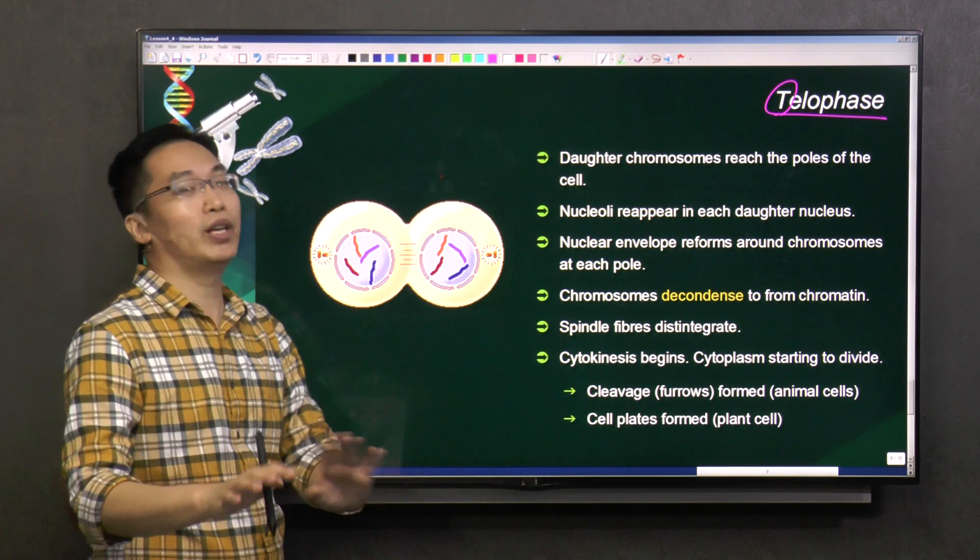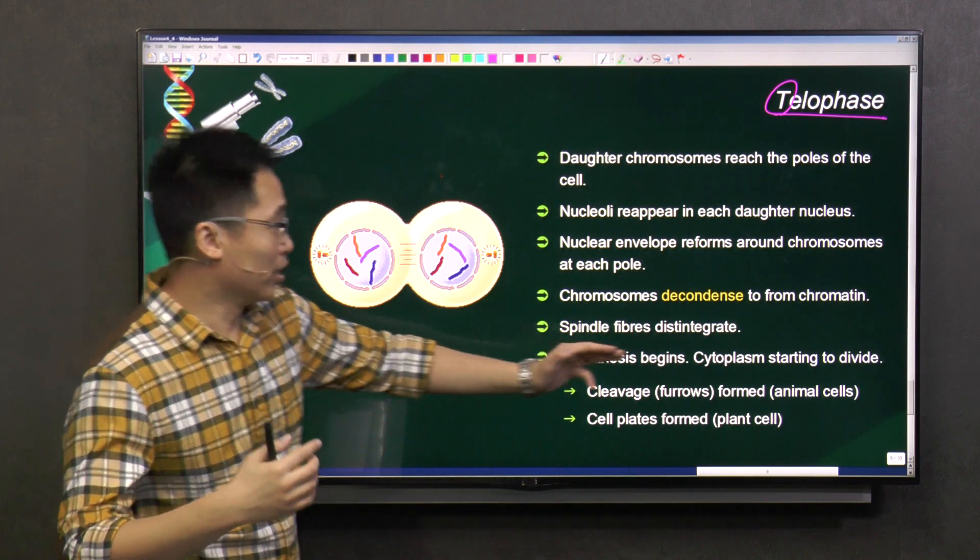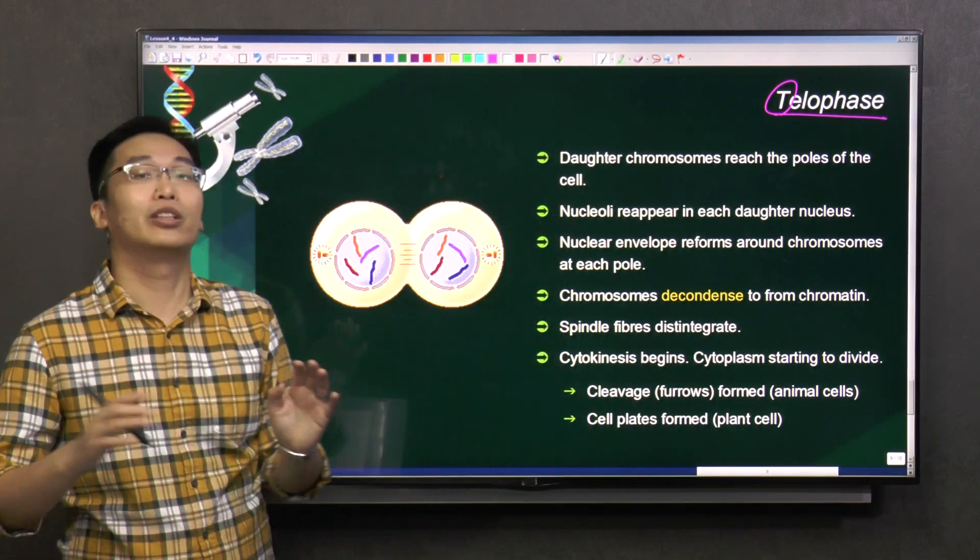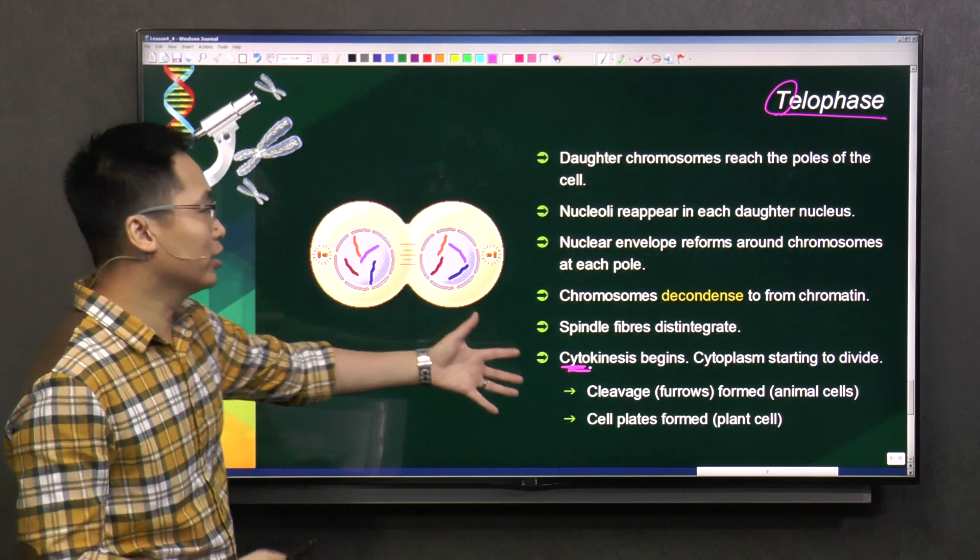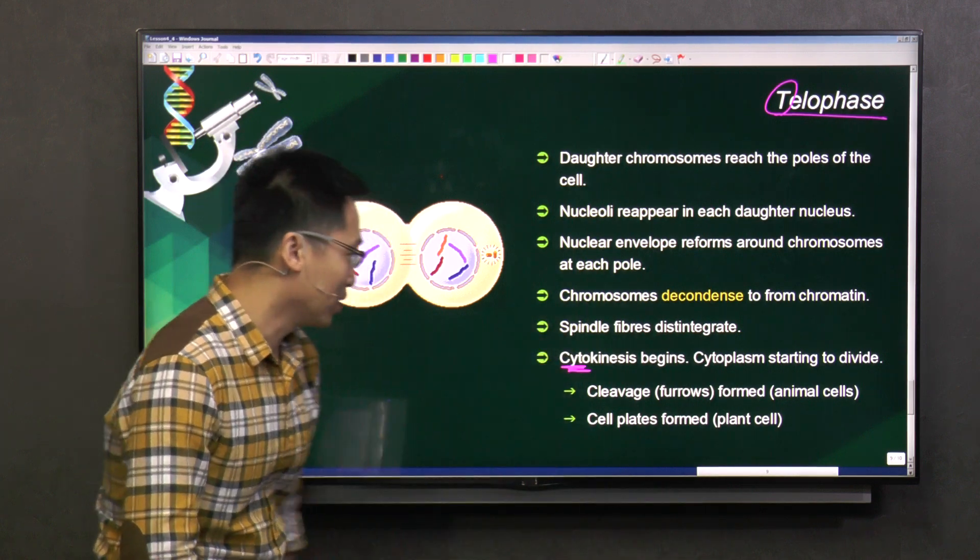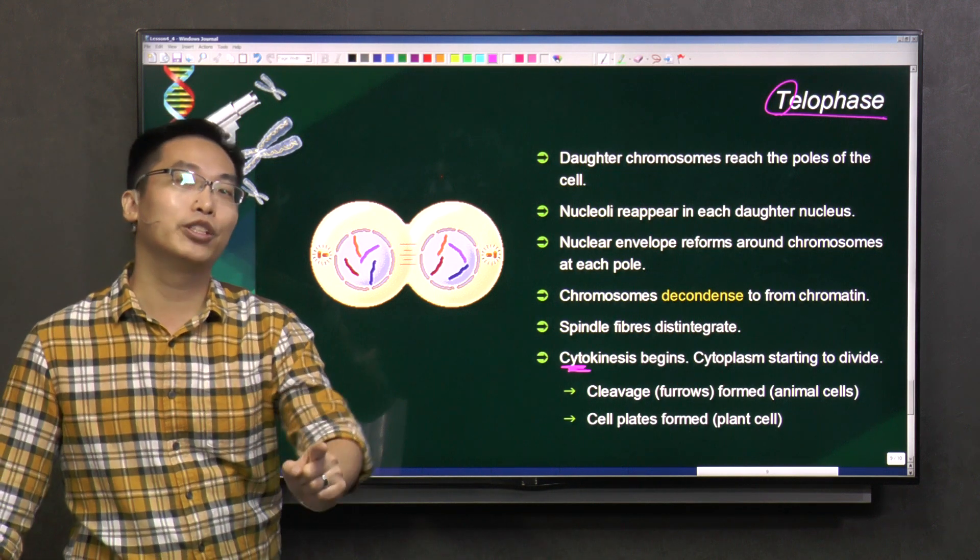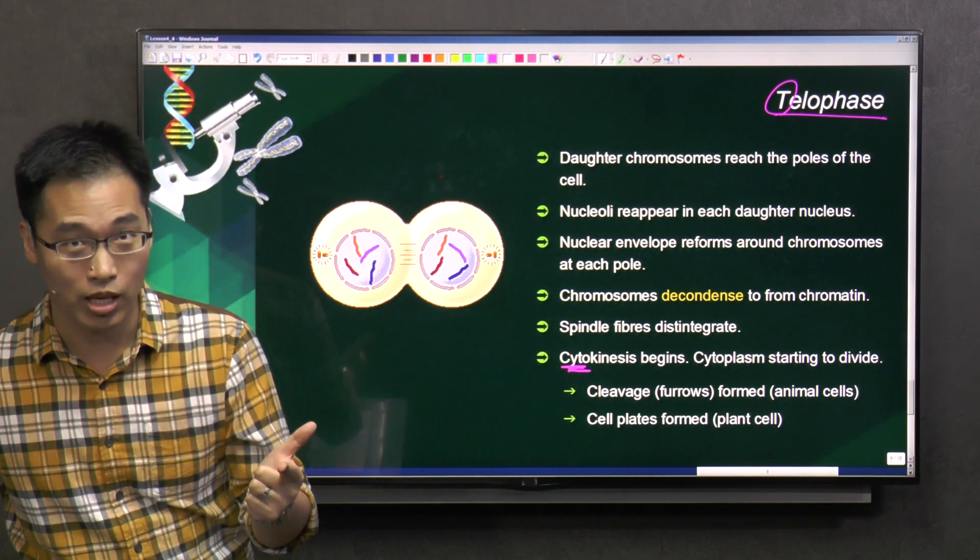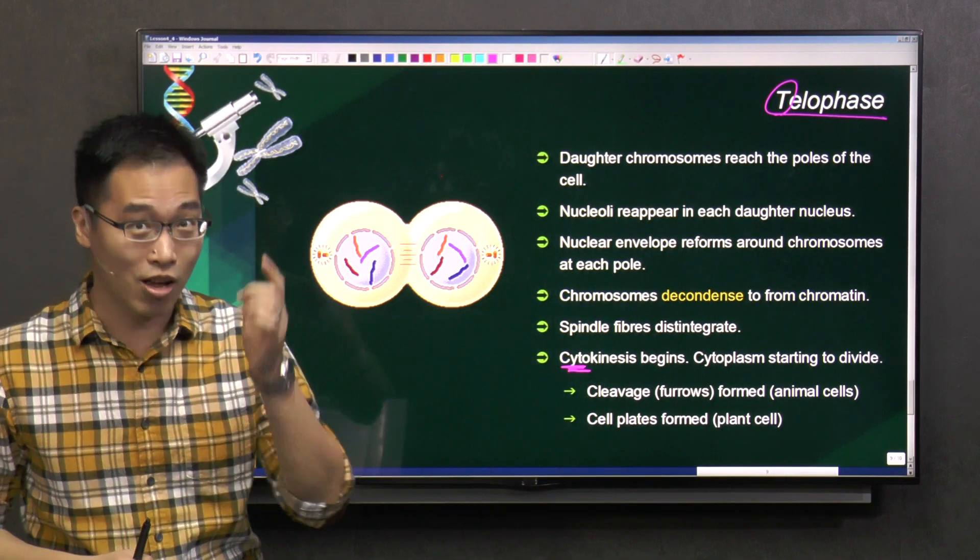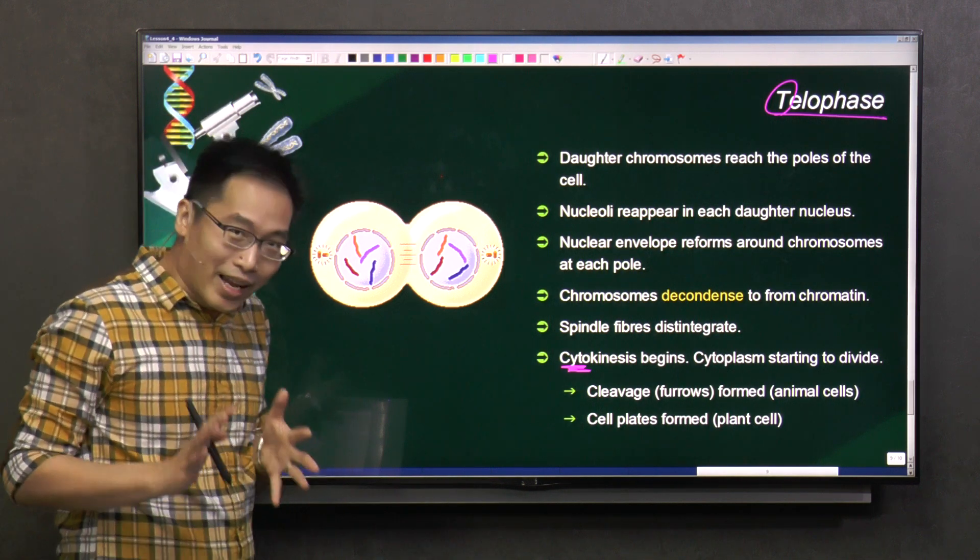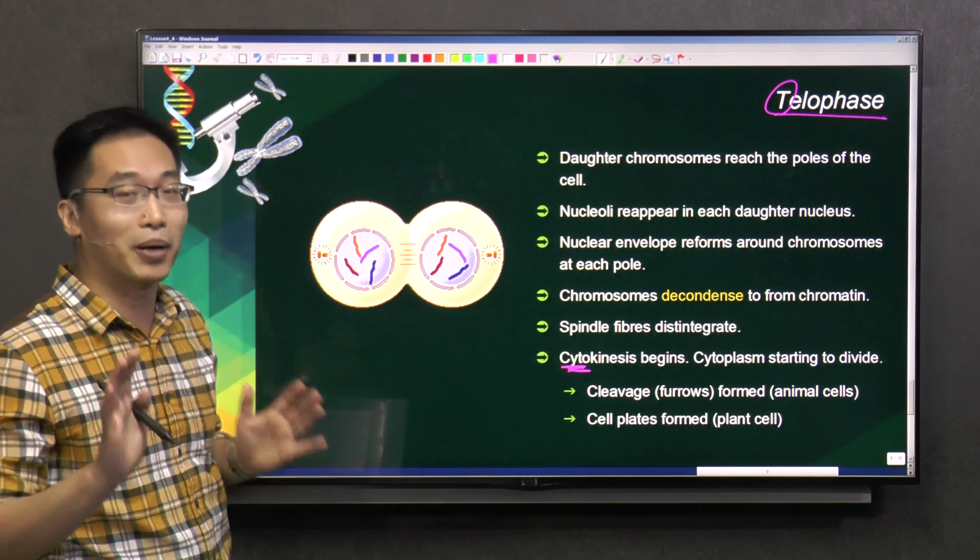So spindle fibers disintegrate, and this is where there's a little bit of overlap. Cytokinesis begins. Cytokinesis, which we learned earlier was the cytoplasm starting to divide. Cytokinesis, cyto if you cannot remember, cyto is the cytoplasm. So cytokinesis is when the cytoplasm starts dividing. And of course this is where there's a little bit of difference. If you remember from your cell chapter, one key difference between animal cells and plant cells is a structure that is bounding the plant cell. It's the cell wall. So there must be a little bit of difference between the two because there are no cell walls present in animal cells and they're only found in plant cells.